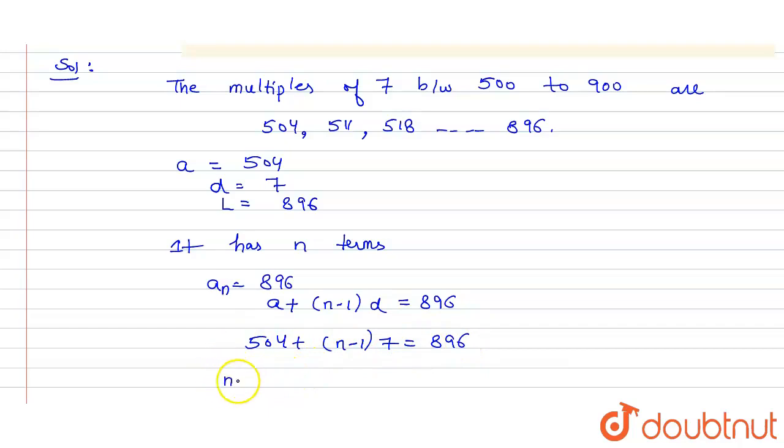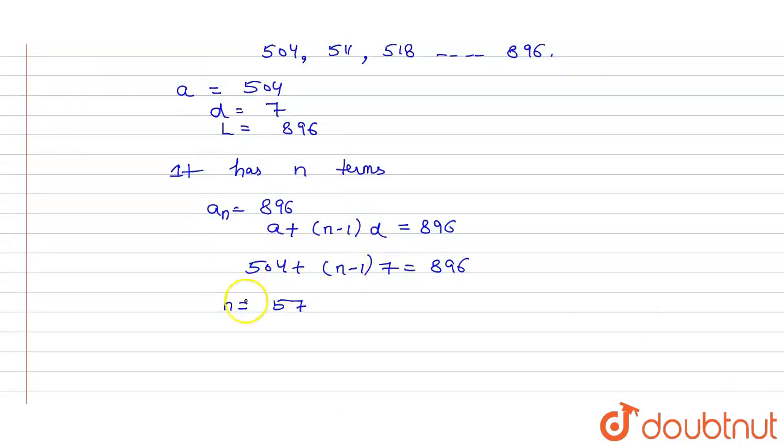Solving it for N, we will get N equals 57. After simplifying it, we will get N equals 57.